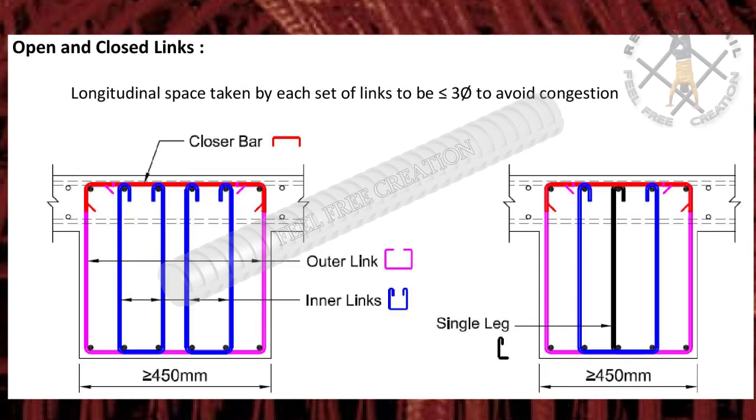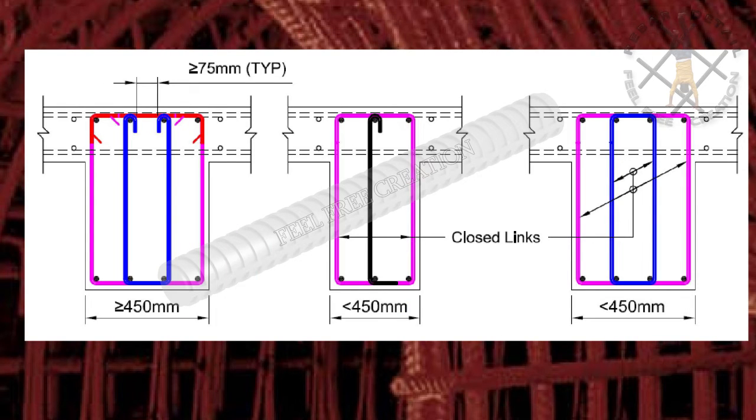In this section, we have shown the open links. If width of beam greater than 450mm we have to go open links option, like shape code 41 plus shape code 21. If width of the beam less than 450mm, then we need to go closed links option like shape code 51.